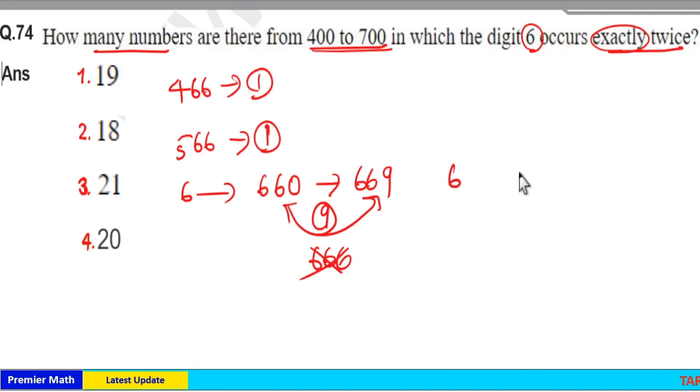Same way, if I take first and third numbers are 6, then from 606 to 696. From 0 to 9, 10 numbers are possible but we should eliminate 666, which means 9 numbers are possible.